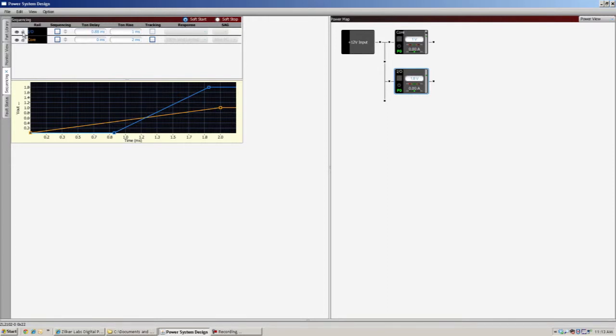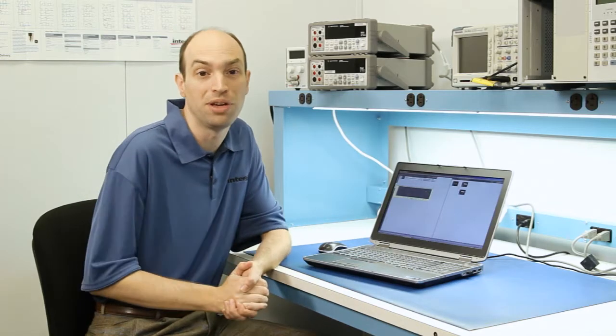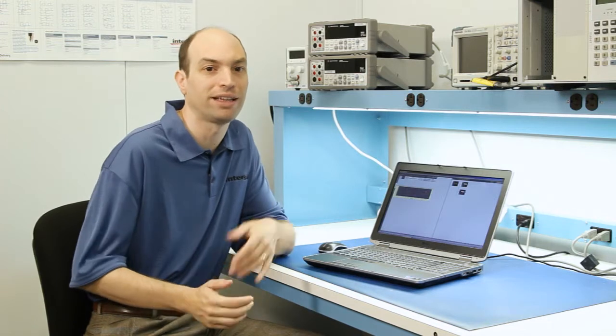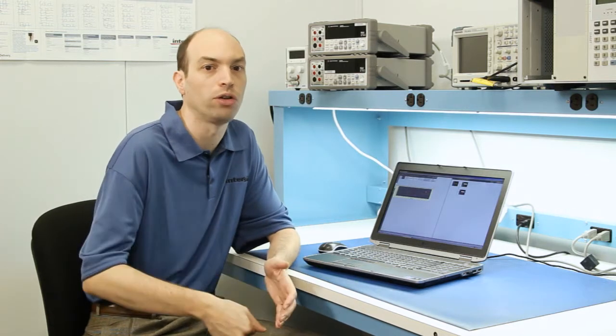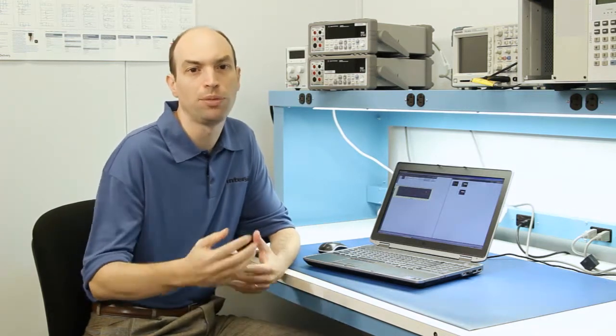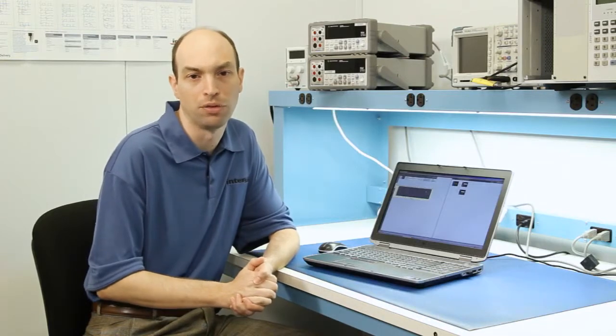The next one over is the lock function. Click on it and it locks out, so when I hover over it, I no longer get the drag and drop toolbox. This is useful if you have multiple rails that sequence exactly at the same point in time or the same soft start ramp. It stops you from clicking on the wrong drag box by mistake.